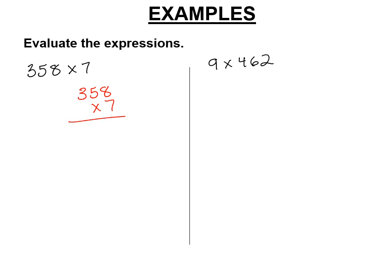7 times 8 is 56. Carry the 5. 7 times 5 is 35, plus 5 is 40. 7 times 3 is 21, plus 4 is 25. And we're going to put our comma in the correct place. 1, 2, 3, and comma. It's 2,506.